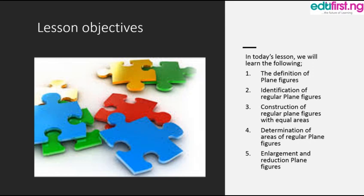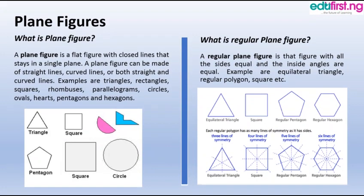And five, enlargement and reduction of plane figures. What is a plane figure? A plane figure is a flat figure with a closed line that stays in a straight line. A plane figure can be made of straight lines, curve lines, or both straight and curve lines. Examples are triangle, rectangle, square, rhombus, parallelogram, circle, oval, pentagon, hexagon, and likewise.